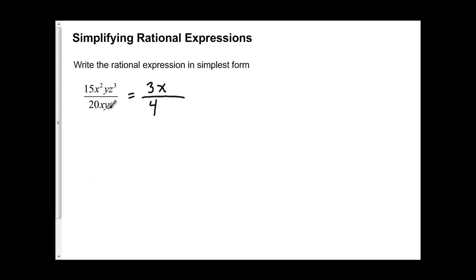The y's, you've got a y on the top and a y on the bottom. When you divide them, you're going to get 1, which means they're going to cancel out. So we are left with no y's.